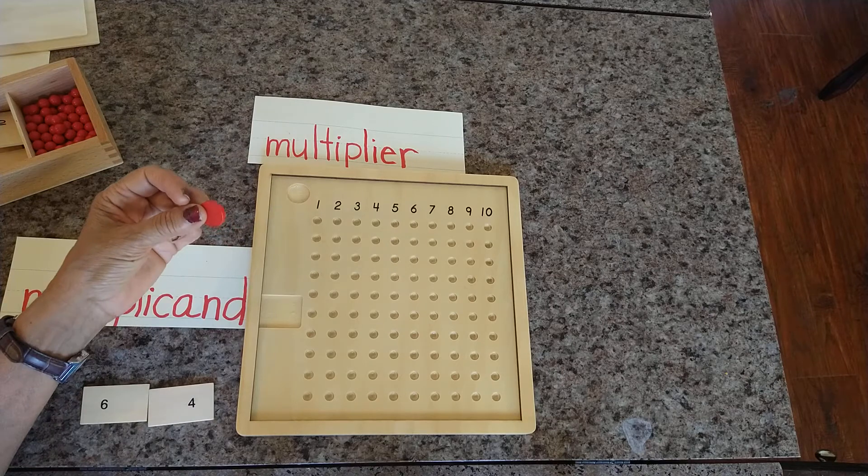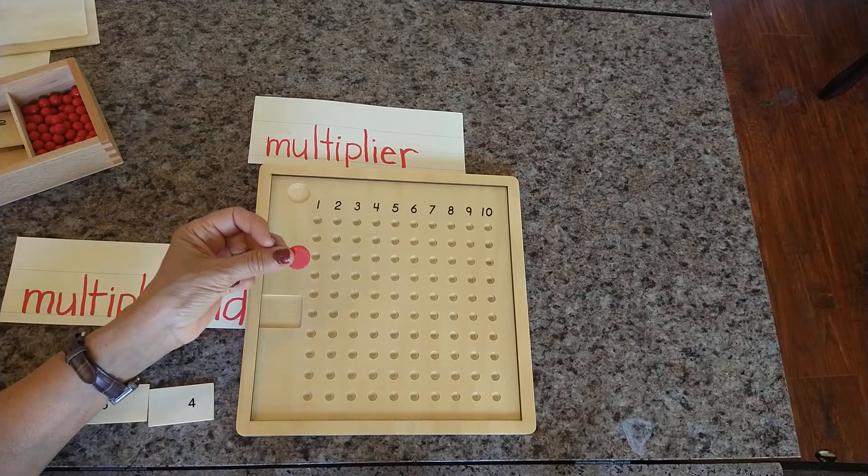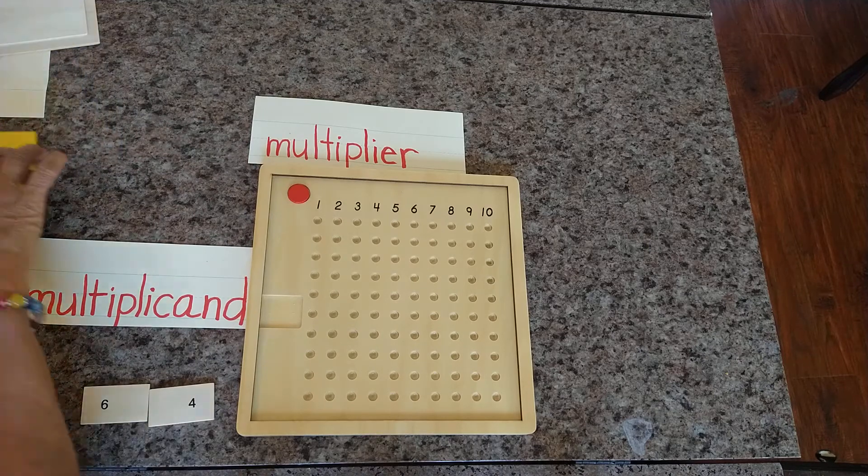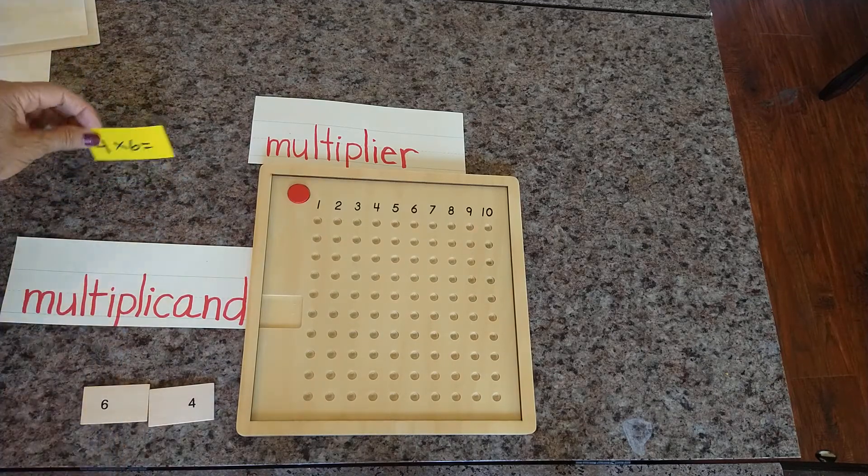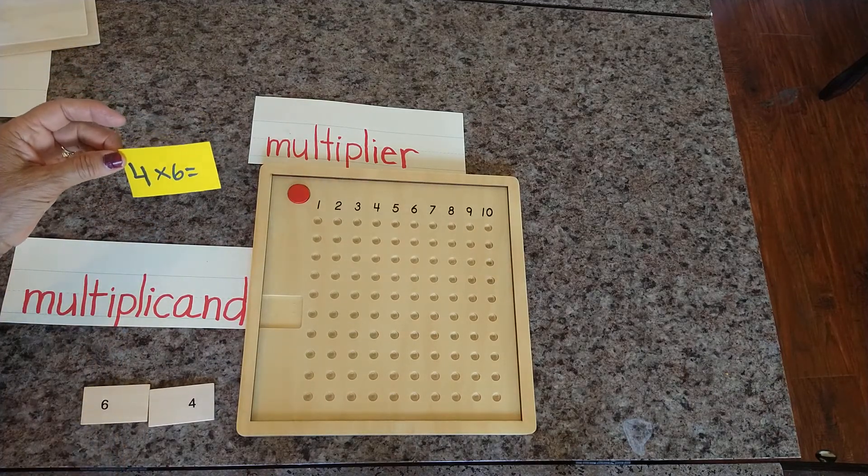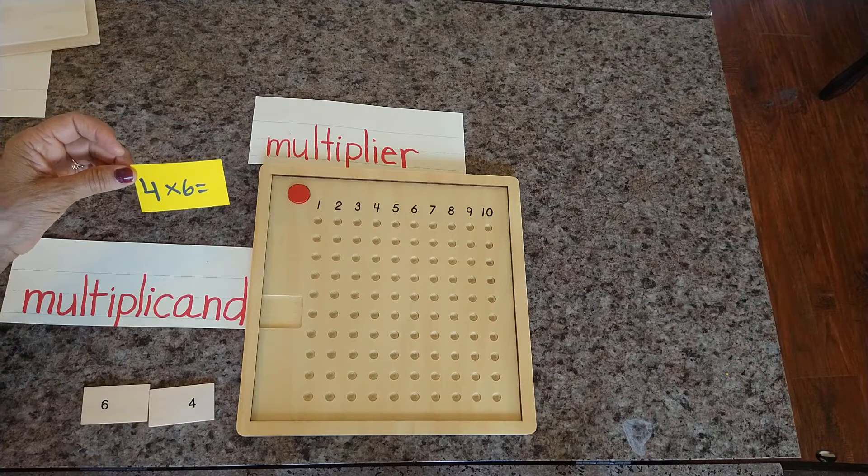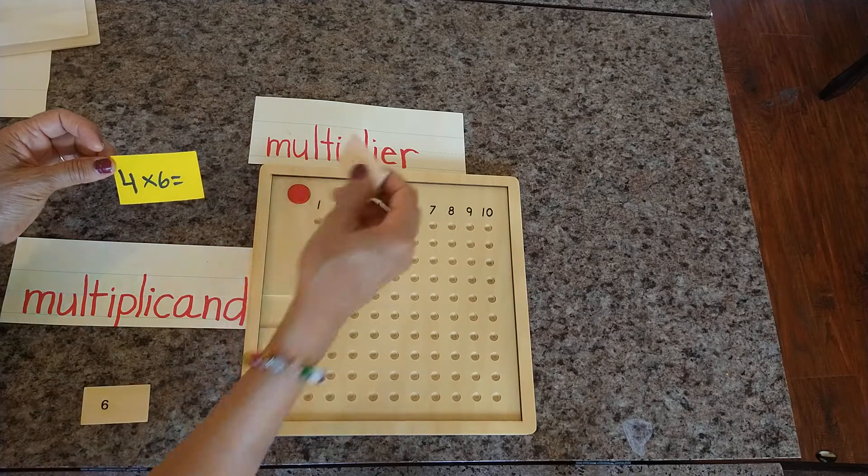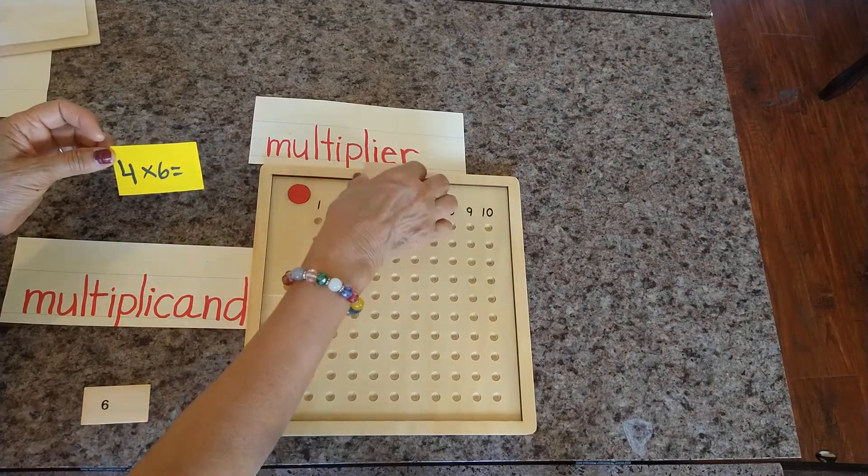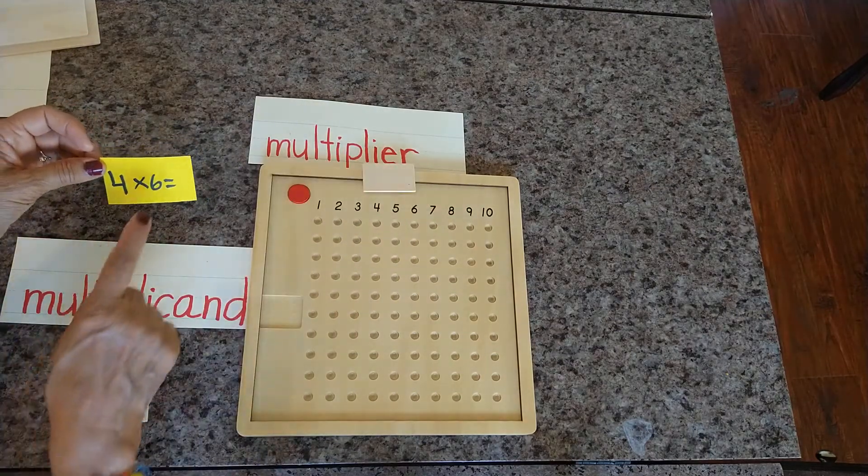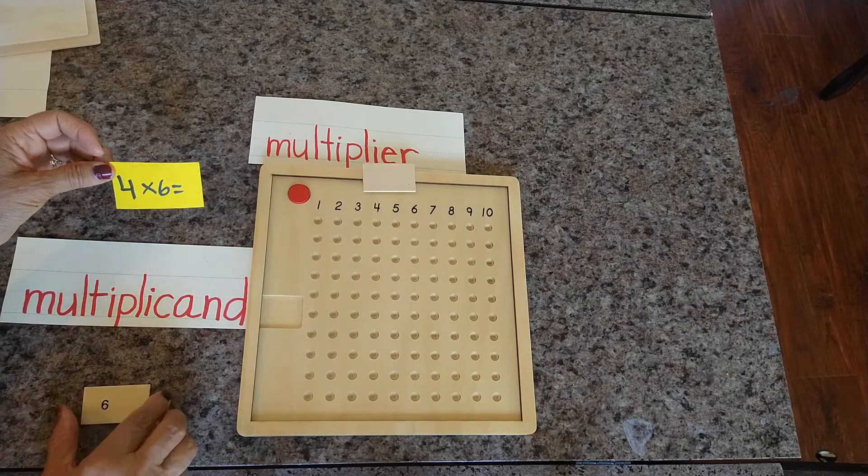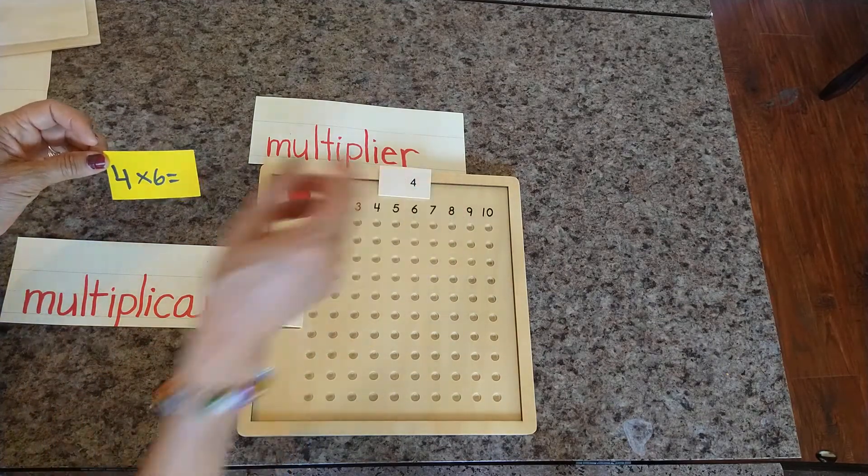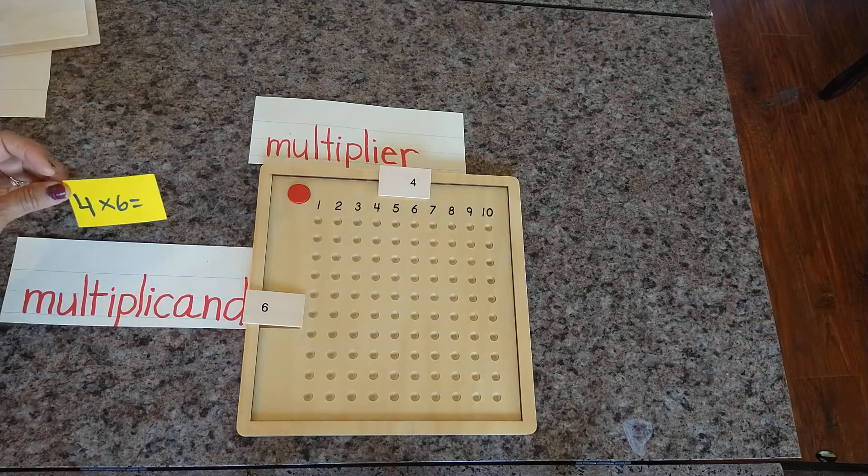So I have here the equation 4 times 6. So 4 is our multiplier, so I'm going to place it right here, and 6 is our multiplicand. As we know, the multiplier tells how many times to make that set.